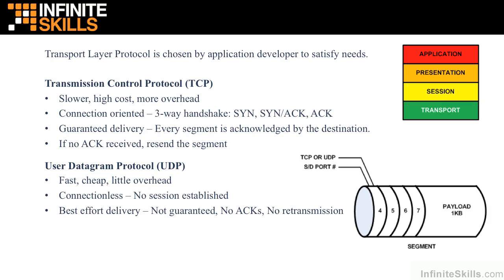That connection setup is 100% overhead — there's no actual data transmitted during that exchange. The guaranteed delivery comes from the positive acknowledgement that the recipient must send for every segment it receives. Every segment that arrives is processed up the stack to layer 4, verified for integrity, and then an acknowledgement frame is sent back to the sender. If a segment goes without an acknowledgement, the sender assumes it was lost and simply retransmits it. This is the guaranteed delivery of TCP.